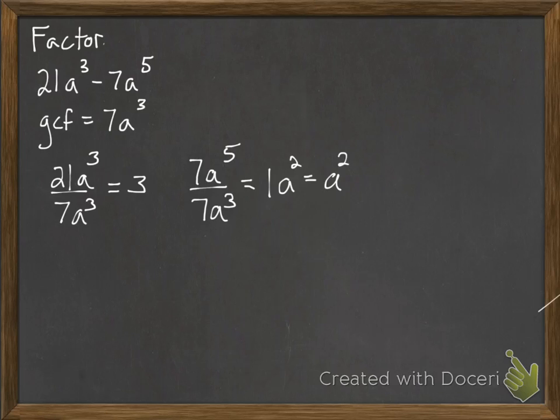Well, now that we know what happens when I divide each of those things by 7a³, I now know what to multiply 7a³ by to get 21a³. I multiply by 3. And to get 7a⁵, I need to multiply by a². So now we can write down our answer and factor it for 7a³ times 3 minus a². And now we have our answer.